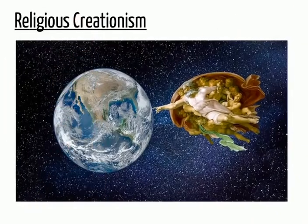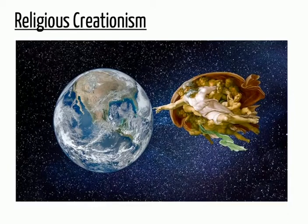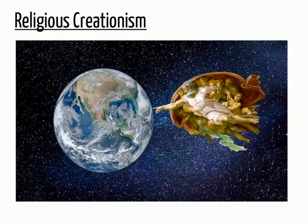Prior to Darwin, the prevailing theory of the time as to the origin of species was religious creationism, which held that species existed by divine design to fulfill a natural function, and that any variation from that function was a departure from the intended ideal.